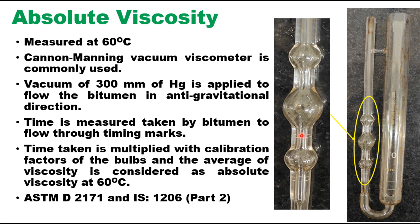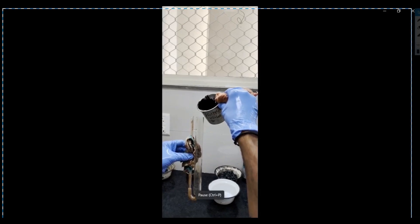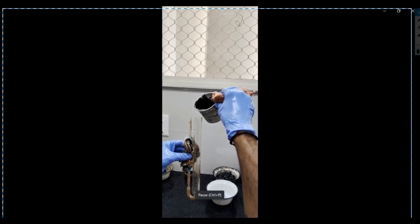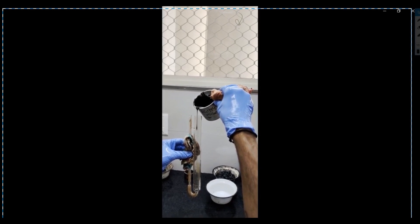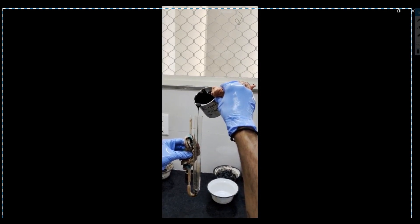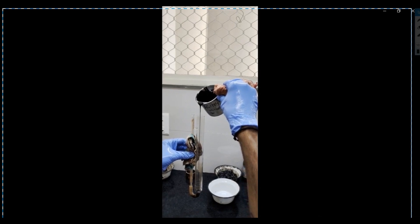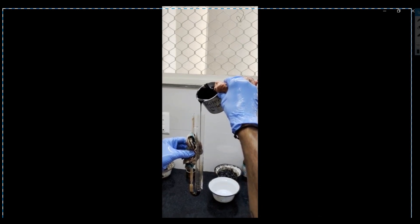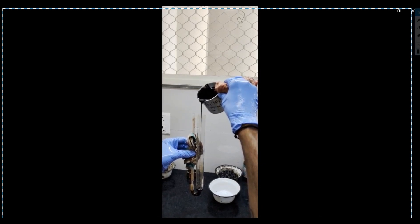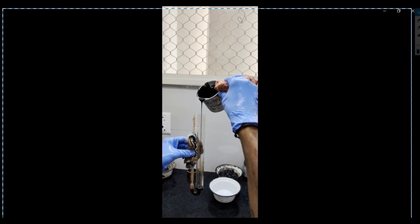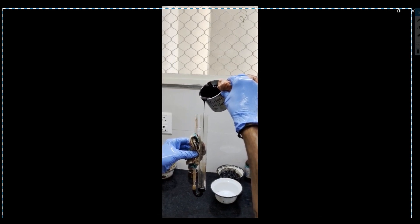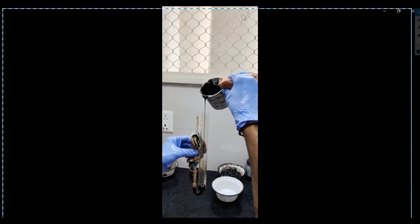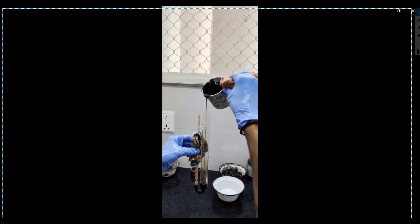Now let me demonstrate this test. The first step is to heat the binder so that it is in an easy flow condition. Then pour the binder into the viscometer through its large side carefully until the level of the bitumen reaches the filling line. The binder as far as possible should not touch the wall of the tube.